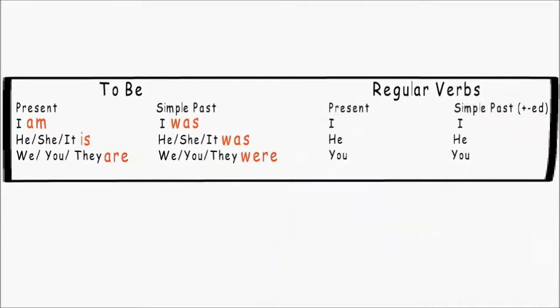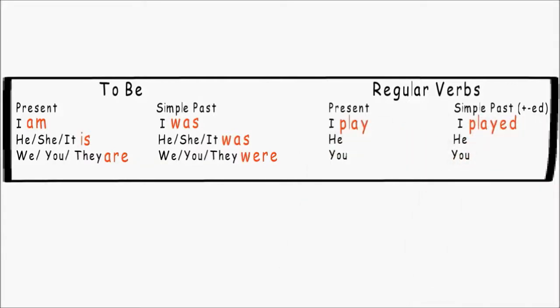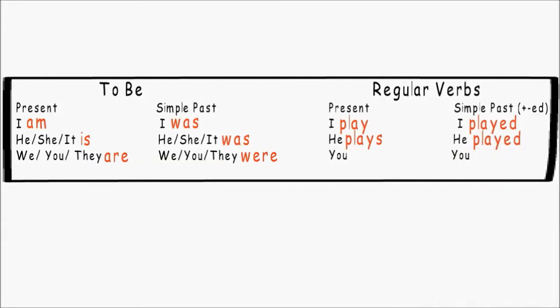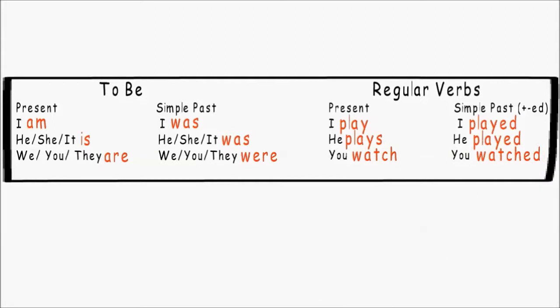Regular verbs, present and simple past. I play, I played. He plays, he played. You watch, you watched. Write all of these down in your notebook.